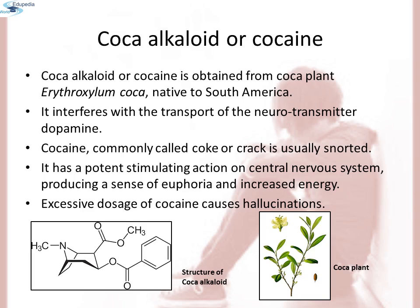Coca alkaloid, or cocaine, is obtained from the coca plant Erythroxylum coca, native to South America. It interferes with the transport of the neurotransmitter dopamine. Cocaine, commonly called coke or crack, is usually snorted. It has a potent stimulating action on the central nervous system, producing a sense of euphoria and increased energy. Excessive dosage of cocaine causes hallucinations. Here you can see the structure of the coca alkaloid and a picture of the coca plant.